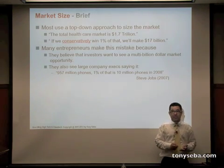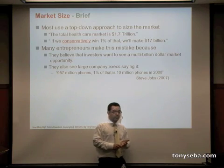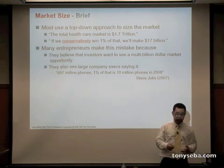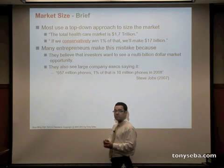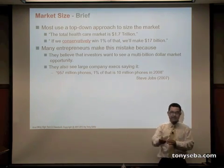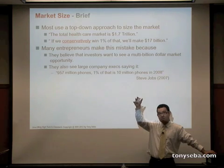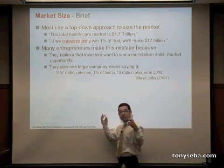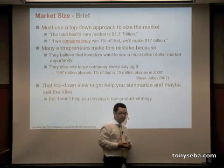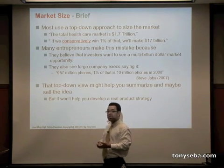Because A, they believe that investors want to see a multi-billion dollar market — and that's true. But also B, they see large company executives doing this. For example, Steve Jobs: '957 million phones, 1% of that and we're going to do 10 million phones in 2008' — this was before the iPhone. If it's good enough for Steve Jobs, it's good enough for me. These are multi-billion dollar companies already. This is not bad for selling an idea, but it is useless — worse than useless — for developing a product strategy.